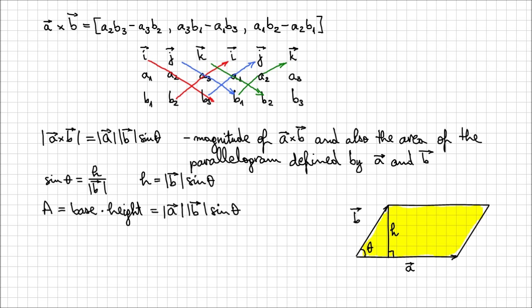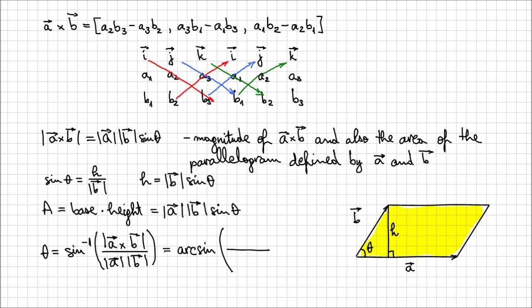Based on the definition of the cross product we can also determine the angle theta by reorganizing the formula. Theta is the inverse sine of the cross product between a and b divided by the magnitude of a times the magnitude of b. This notation sine at power minus 1 doesn't mean at power minus 1 — it's the inverse of the sine. A clearer notation would be arc sine, though in North America that notation isn't very popular even though sine at power minus 1 is confusing.